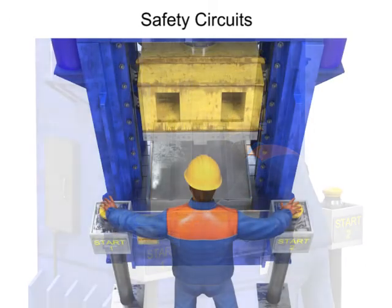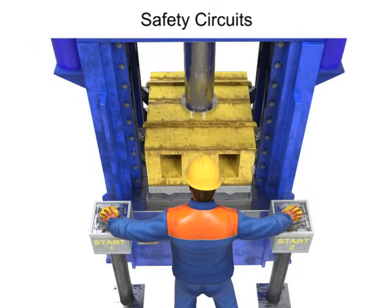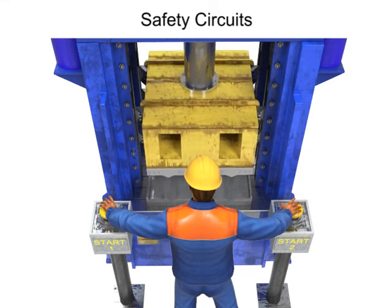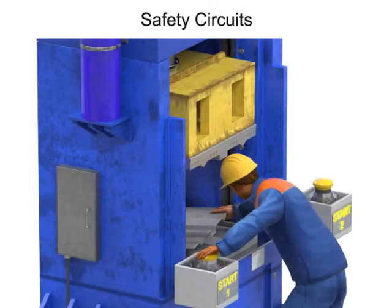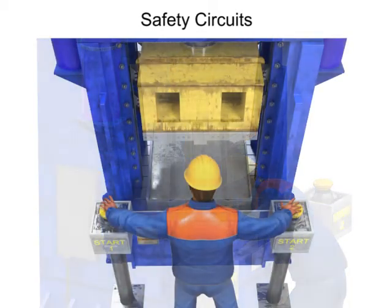Two-hand controls are an actuation device that requires the concurrent use of both hands of the operator to start a cycle. The purpose is to prevent the operator from having any part of his or her body in the work envelope of the machine during its operating cycle.